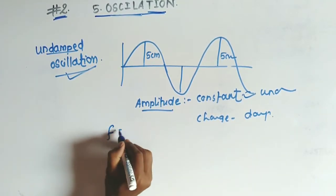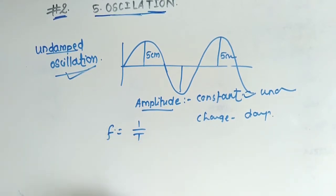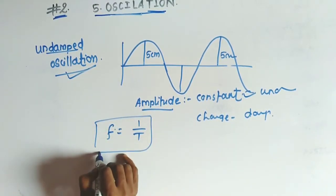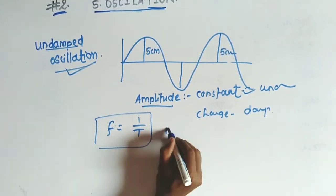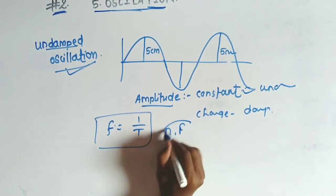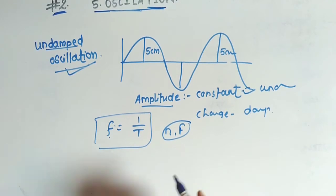Frequency is the reciprocal of time period. The formula is: f is equal to 1 upon T. That is all about frequency.